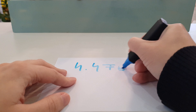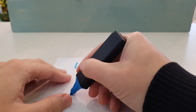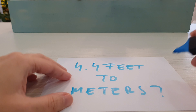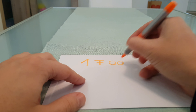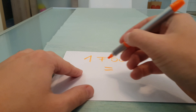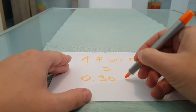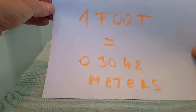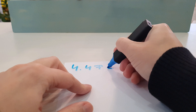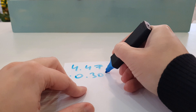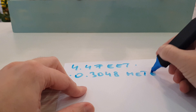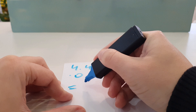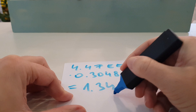In this video I will show you how to convert 4.4 feet to meters. Here is the formula: 1 foot equals 0.3048 meters. We multiply 4.4 feet by 0.3048 meters and the result is 1.34112 meters.